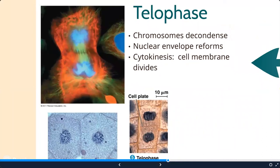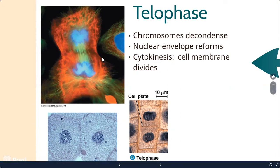Telophase is the final stage of mitosis and is essentially the reverse of prophase. The spindle fibers start to disappear and detach from the chromosomes. The chromosomes decondense, going back into the form of chromatin. The nuclear envelope reforms - except now there are two, one forming at either end of the cell.